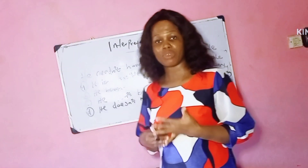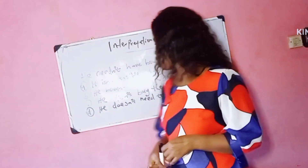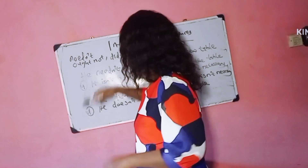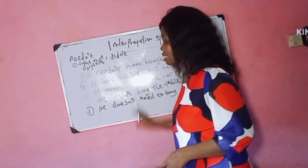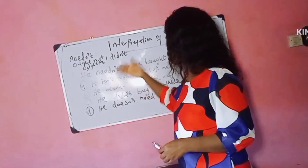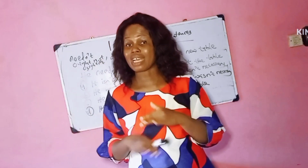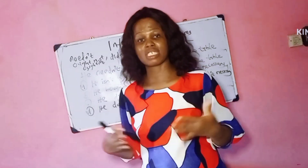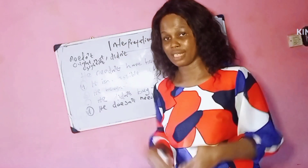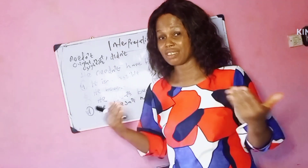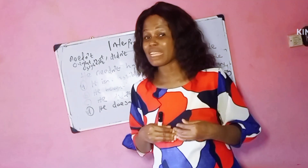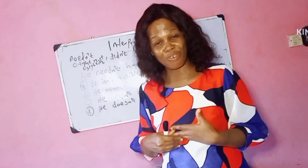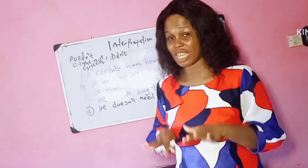When you have a sentence that contains 'needn't have' or 'didn't need to,' it means that the action has taken place, but it wasn't necessary, so you regret it. For example, 'I needn't have done this video at this time' means that I have done the video at this time, but I regret it. The action of doing the video has taken place, but it wasn't necessary. Therefore, I regret doing the video at this time. When you see 'needn't have' or 'did not need to,' just know that the action has taken place but it wasn't necessary, so the person regrets it.